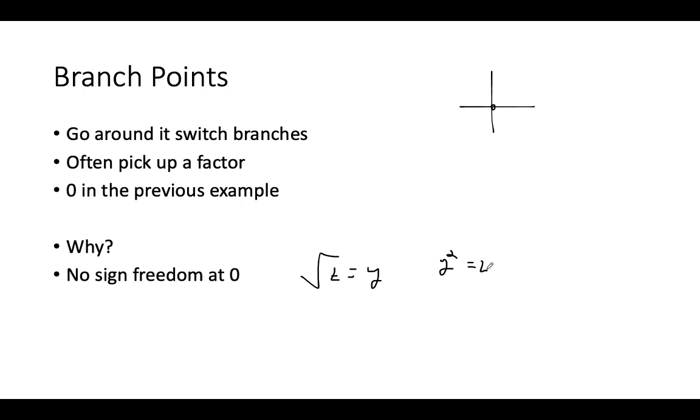You have this ambiguity as plus or minus square root of z satisfying this. But at 0, there's no ambiguity. If z is 0, then y squared is 0 as well. Since it's the only point with no ambiguity, it's the point that you use to switch between branches.